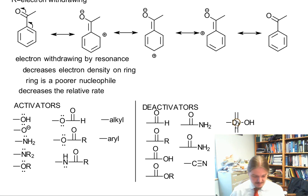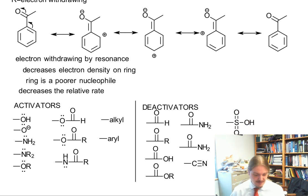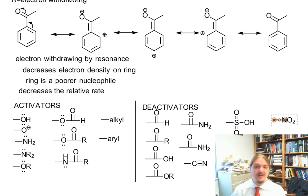Also electron withdrawing by resonance are sulfonyl groups — whether it's sulfonic acid, sulfonyl chloride, or whatever is on the other side of the sulfonyl group — and the nitro functional group is also in this category.